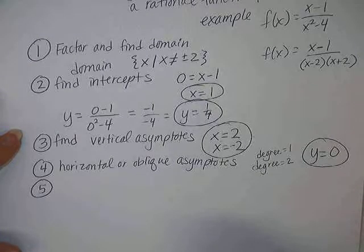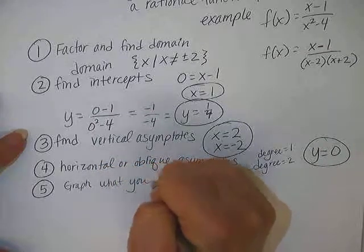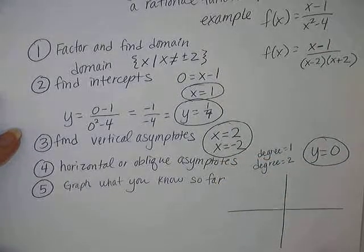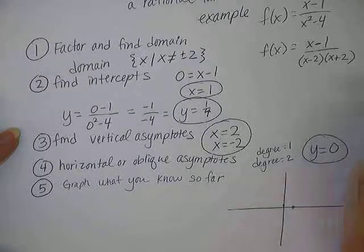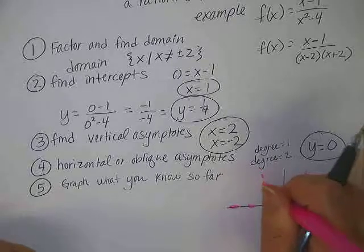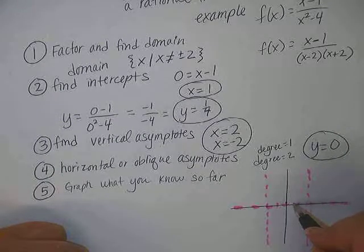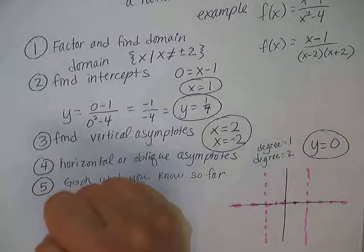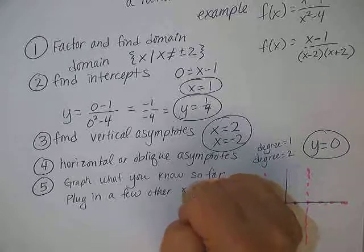Okay. 5 says to plug in some other numbers and find where the graph is above or below the x-axis. Don't worry about writing in those specific details. Just go ahead and start graphing what you have so far. Graph what you know so far. Okay. So here's a graph. And I'm going to put in my x-intercept at 1, my y-intercept at 1 fourth, a horizontal asymptote at 0, a vertical asymptote at 2, another vertical asymptote at negative 2. Okay. So so far we have our asymptotes. We know the graph is going to go near those areas. It's looking like this is going to go up here maybe but we may not know for sure.